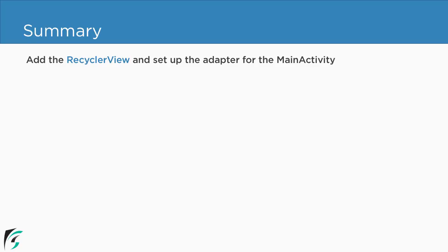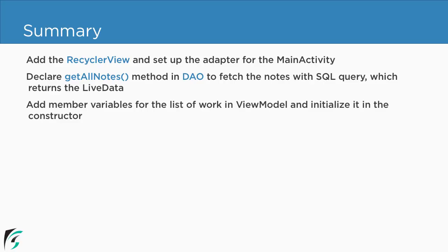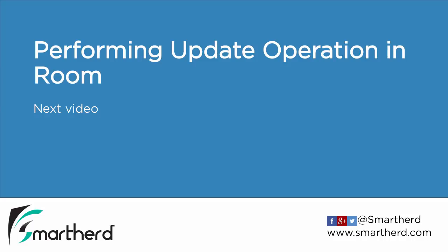To summarize everything we learned: we need to add the RecyclerView and set up the adapter in MainActivity. In the DAO interface, declare the getAllNotes method with the @Query annotation and SQL statement returning LiveData of notes. In the ViewModel, add the member variable for the list of notes, initialize it in the constructor fetching from DAO, and add a getter method. In MainActivity, observe the LiveData and set the UI with the list of notes. That was all about fetching data from the database and displaying it in the UI. In the next video, we will learn about performing update operations in Room — so stay tuned.